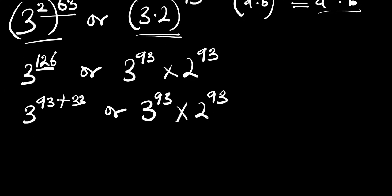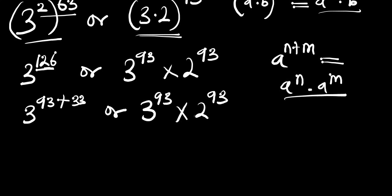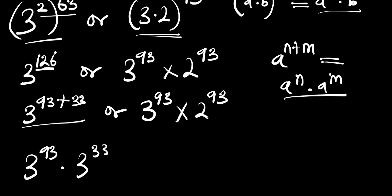Now let's make use of another identity: if you have a to the power of n plus m, this equals a to the power of n times a to the power of m. Applying this identity, we are going to have 3 to the power of 93 times 3 to the power of 33, versus 3 to the power of 93 times 2 to the power of 93.